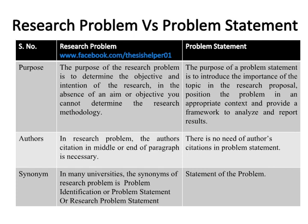In a research problem, the author's citation in the middle or end of the paragraph is necessary, while there is no need for author's citations in a problem statement. In many universities, the synonyms of research problem are problem identification, problem statement, or research problem statement, while the synonym of problem statement is statement of problem.